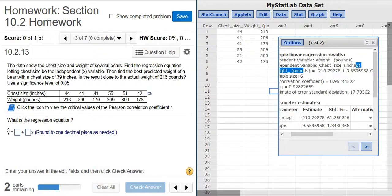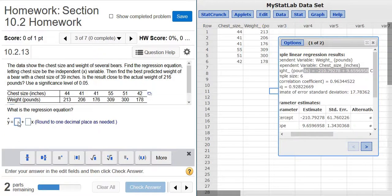And there's the regression equation right there. It's right here. I'm going to highlight it so you see it, this equation here. So it looks like it's one decimal. So negative 210.8, and then 9.7.